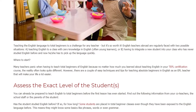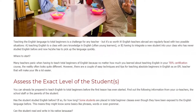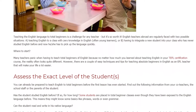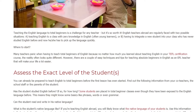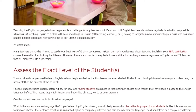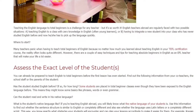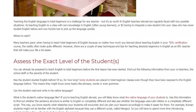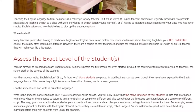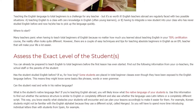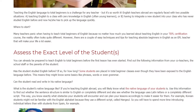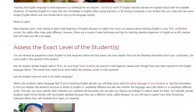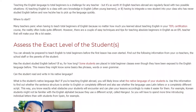A. Assess the exact level of the students. You can already be prepared to teach English to total beginners before the first lesson has even started. Find out the following information from your co-teachers, the school staff, or the parents of the student. Have the students studied English before? If so, for how long? Some students are placed in total beginner classes even though they have been exposed to the English language before, which means they might know some basics like phrases, words, or even grammar.